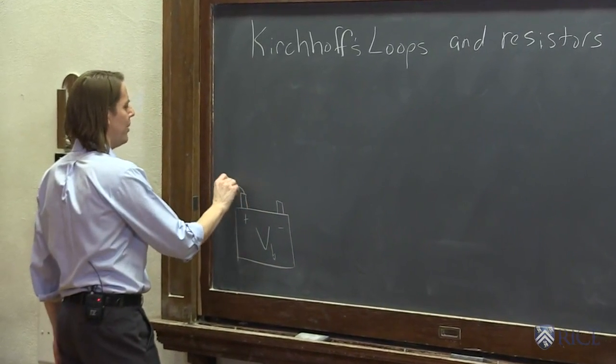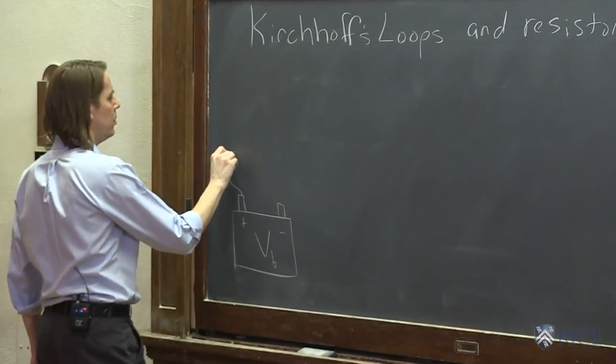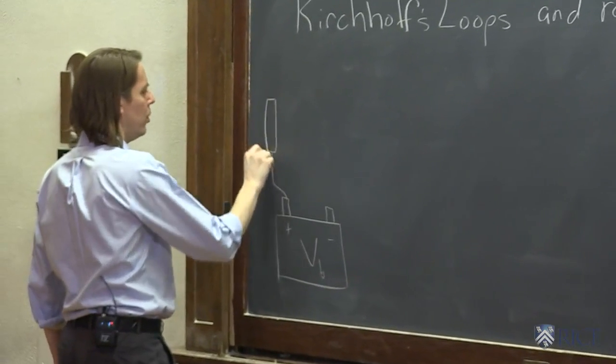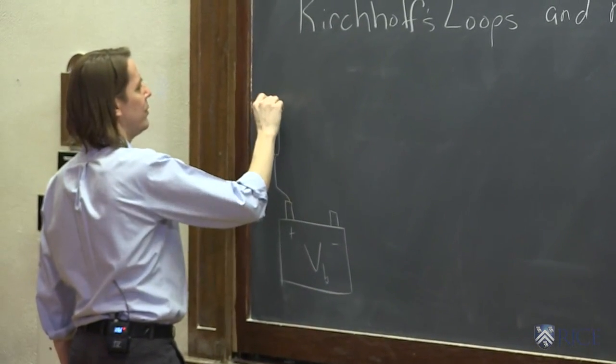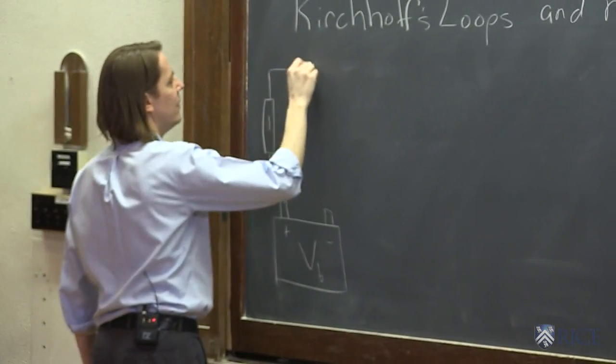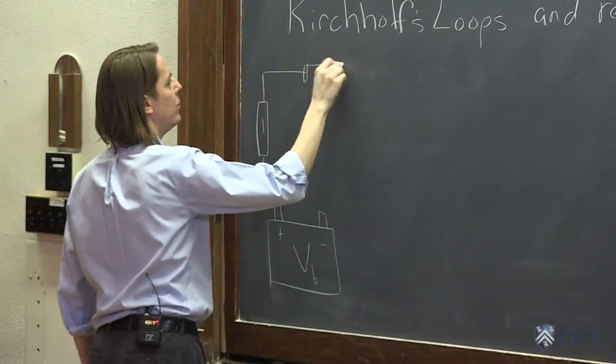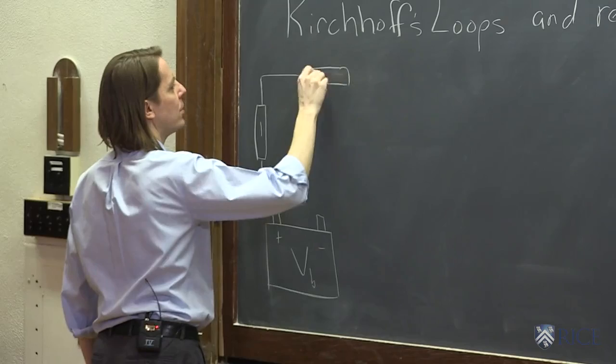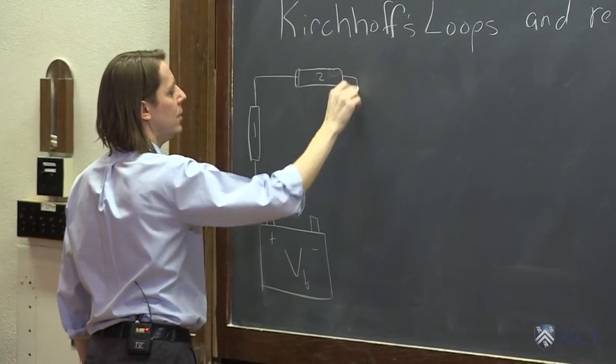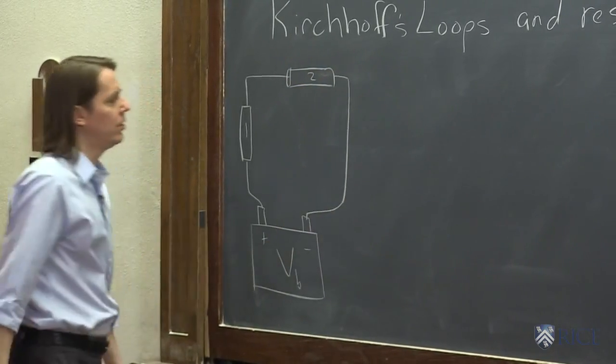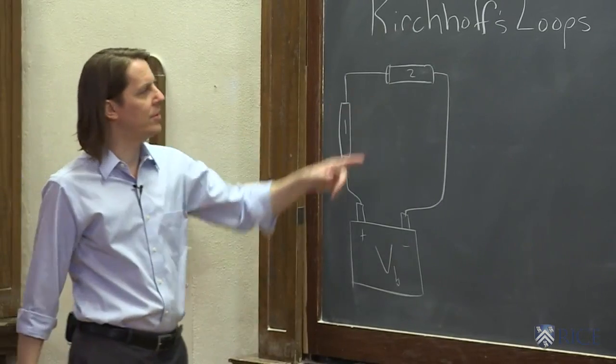and the wire might come out and go to one chunk of resistive material like that. We'll call that number one, and then maybe go to another chunk we'll call two, like that. And there's your circuit, two resistors in series.